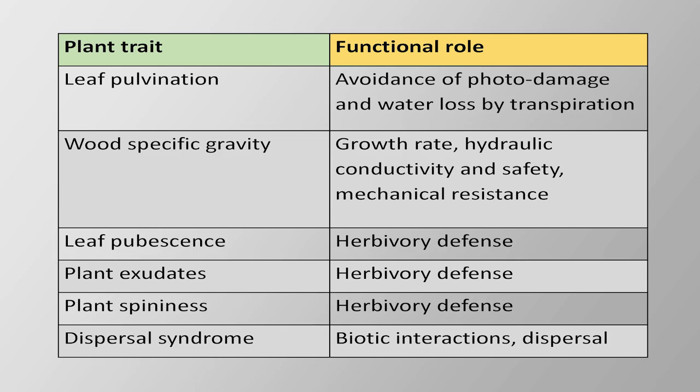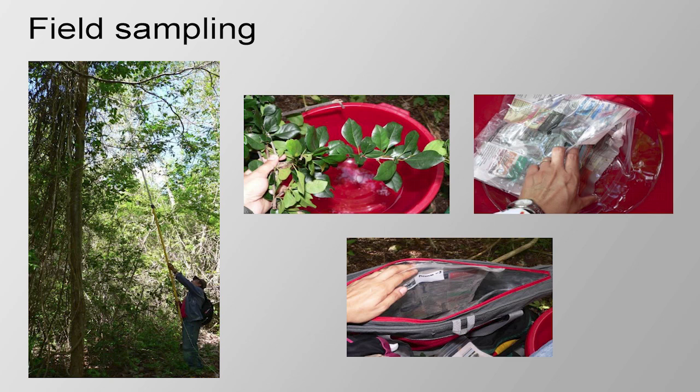For the sampling of the branches, sampling took place between 6 and 11 a.m., selecting branches that were sun-exposed and trying to collect those that had the best-looking leaves — leaves that had not been damaged by herbivory or other factors. Leaves were collected and placed in plastic bags with moistened newspaper.